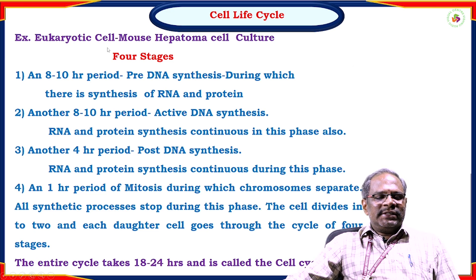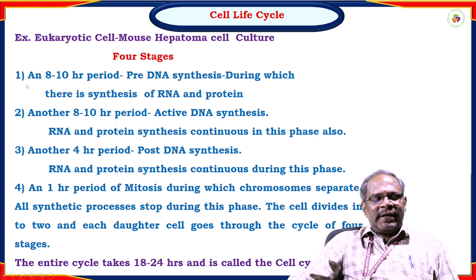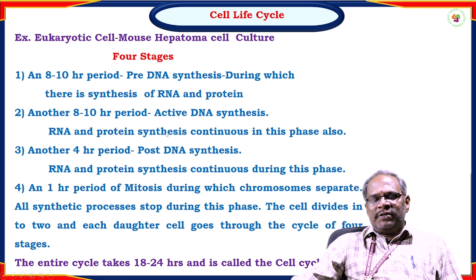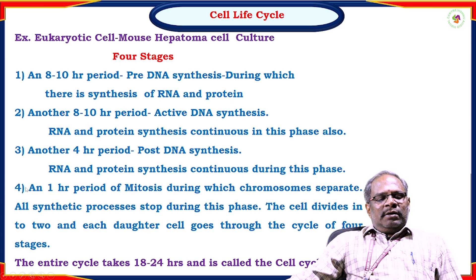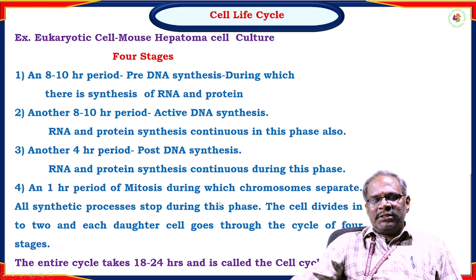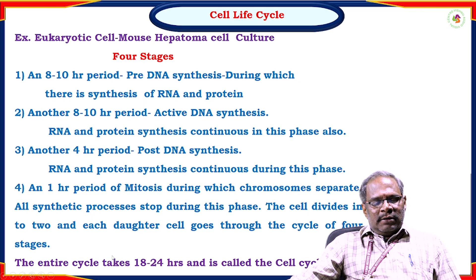Coming to the cell life cycle: using the example of a eukaryotic cell — the mouse epithelial cell culture. It contains four stages. The first phase is 8 to 10 hours of pre-DNA synthesis, during which RNA and protein synthesis take place. The second stage is another 8 to 10 hours of active DNA synthesis, during which RNA and protein synthesis also continue. The fourth stage is approximately one hour of mitosis, during which chromosomes separate and all synthetic processes stop. The cell then divides into two, and each daughter cell goes through the same cycle of four stages. The entire cycle takes 18 to 24 hours and is called the cell cycle.